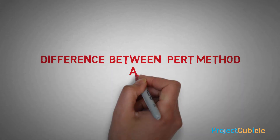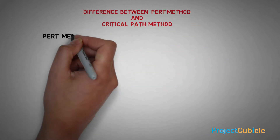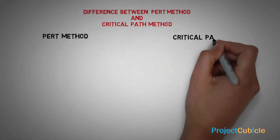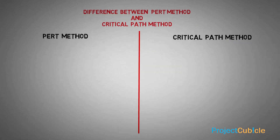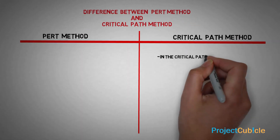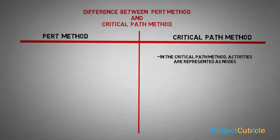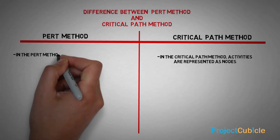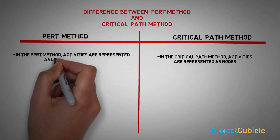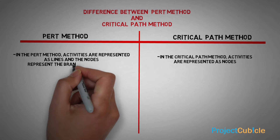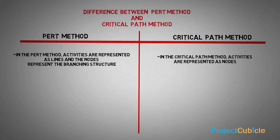Difference between PERT method and critical path method. First: in the critical path method, activities are represented as nodes, whereas in the PERT method, activities are represented as lines and the nodes represent the branching structure.